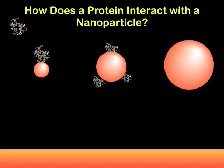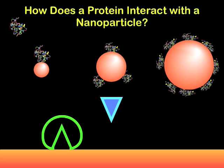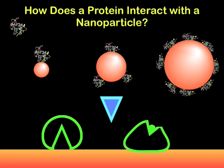For enzymes, it is also very important how the protein binds to the particle. If the enzyme binds so that the active site, or lock, is facing the particle surface, it will be impossible for the key to bind to the active site. In another scenario, if the protein binds to the surface and spreads out, losing much of its structure, the shape of the active site may be changed. This would prevent the key molecule from binding and would result in an inactive enzyme.